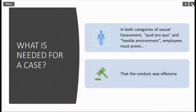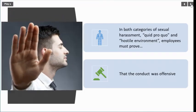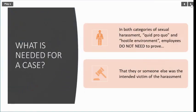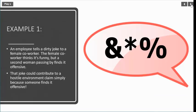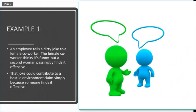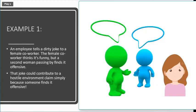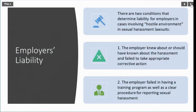In sexual harassment lawsuits, in both categories, the employee must prove that the conduct was offensive. However, employees do not need to prove that they or someone else was the intended victim. For example, an employee tells a dirty joke to a female co-worker who finds it funny, but a second woman passing by finds it offensive — that joke could contribute to a hostile environment.